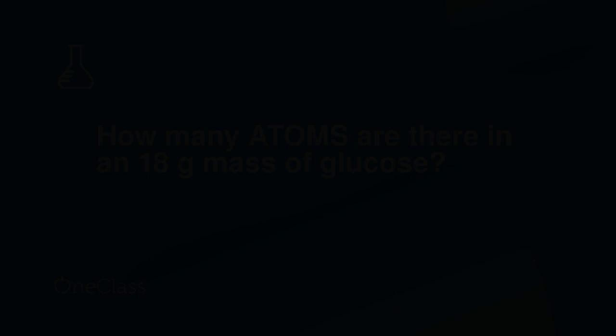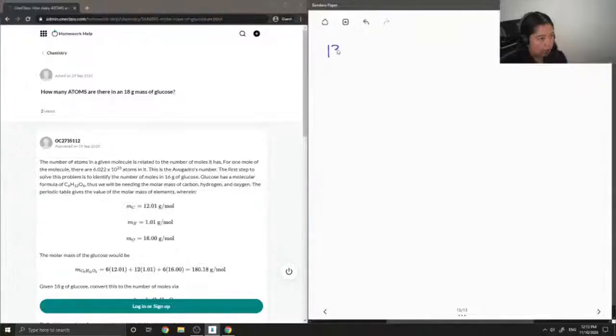Okay, so let's move on to question number 13. How many atoms are there in an 18 gram mass of glucose? So first I'm going to write out the structure of glucose so that we can figure out its chemical equation to then calculate its molar mass.